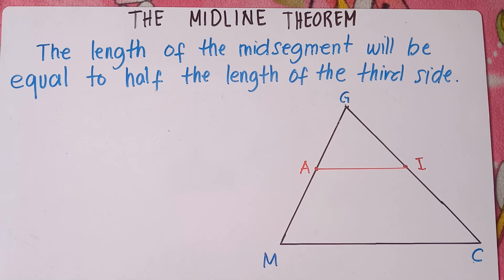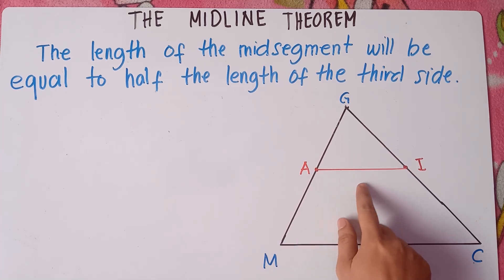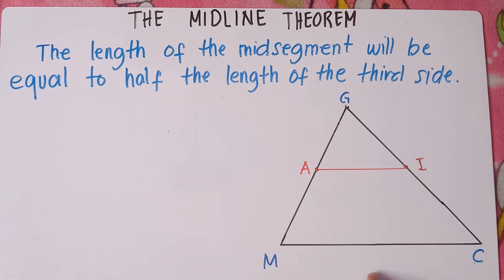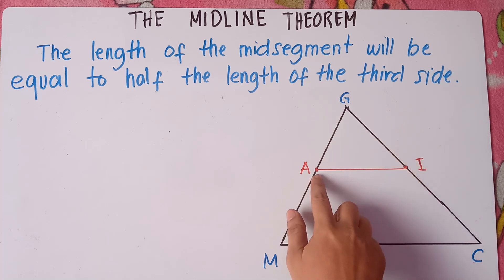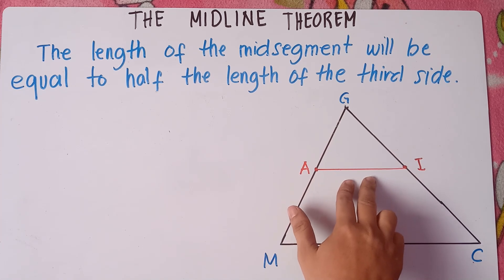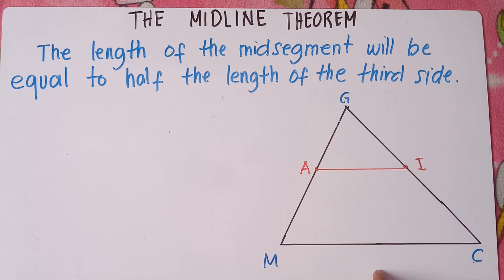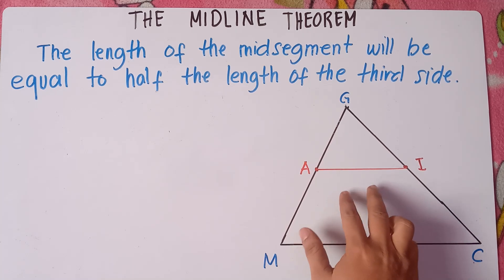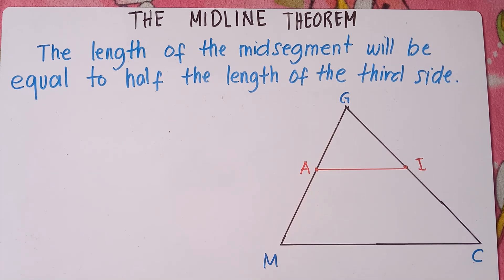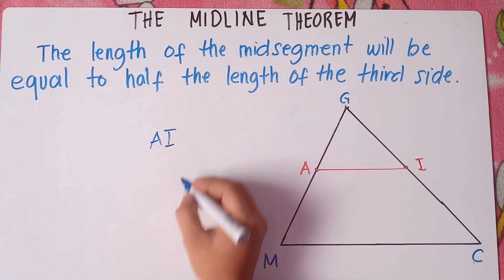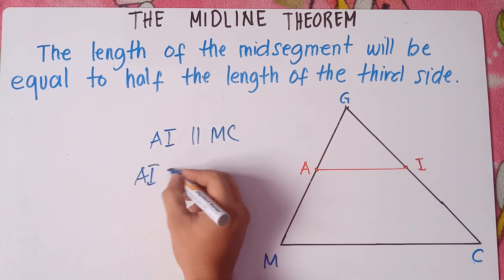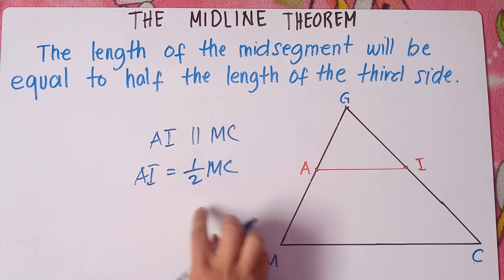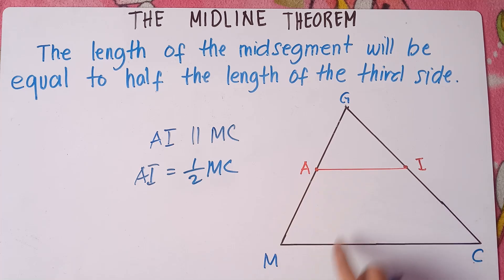The midline theorem states that the length of midsegment AI will be equal to half the length of the third side MC. So AI is parallel to MC, and the length of AI equals one half the length of MC.